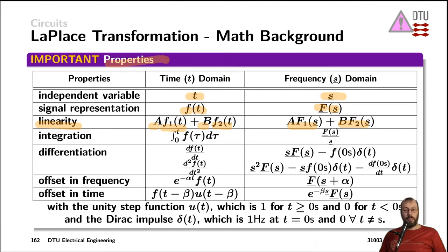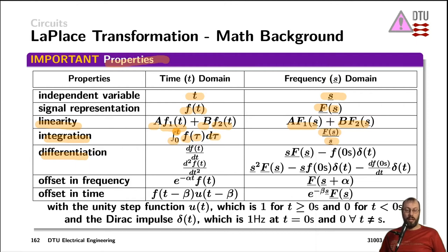When we looked at inductors and capacitors we already met integration and differentiation, which are also very handy properties of the Laplace transformation. If we integrate in the time domain from 0 to t over a function f (using tau as the running variable), we end up with a division by the complex frequency s in the frequency domain. We already saw that property when using j*omega at a capacitor that integrates the current flowing through it — integrating the current in the time domain ends up as a division by j*omega in the frequency domain, giving us the voltage across the capacitor.